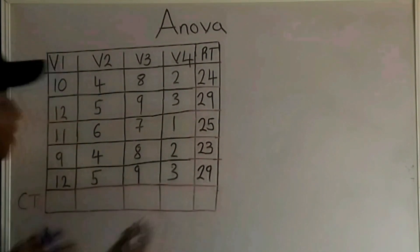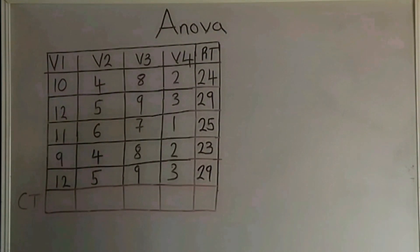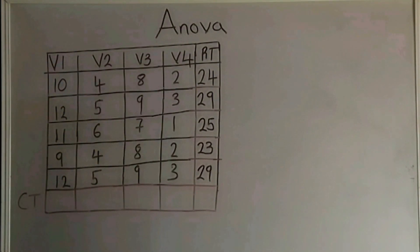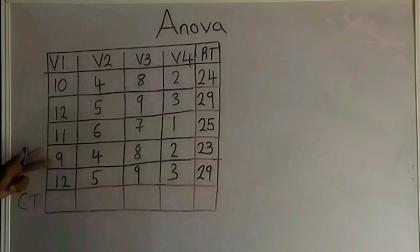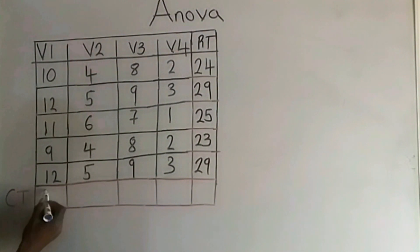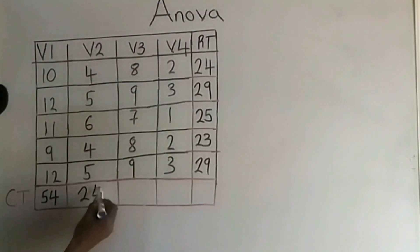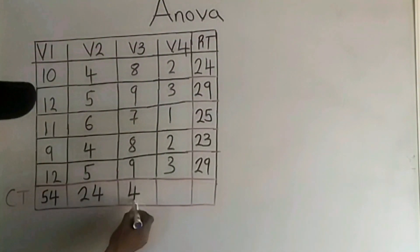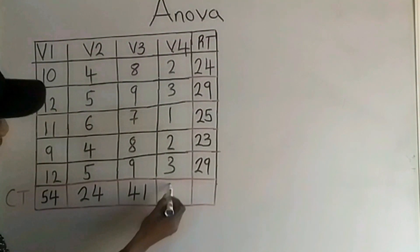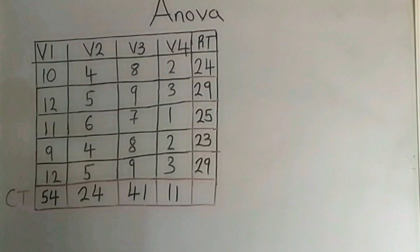I have taken the row totals. The next step is to take the column totals. For the first column, I am going to have 10 plus 12 plus 11 plus 9 plus 12. That is 54, 24, 41 and 11. So I have taken the row total and the column total.